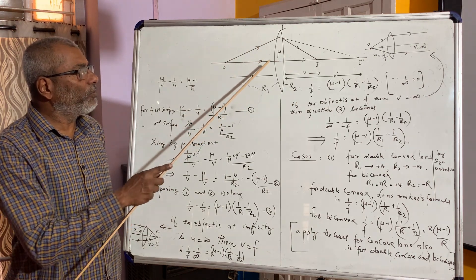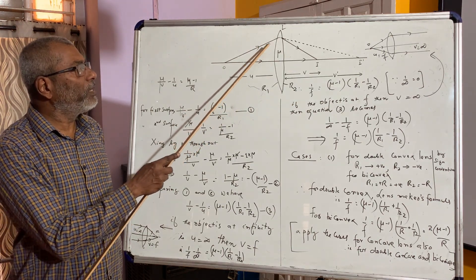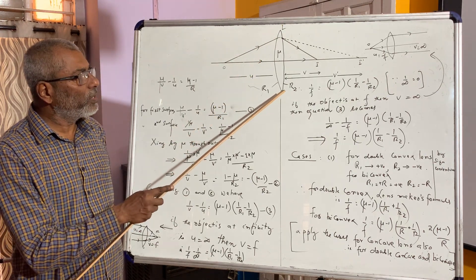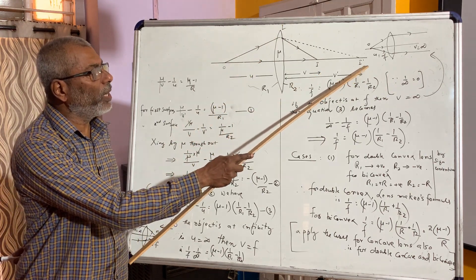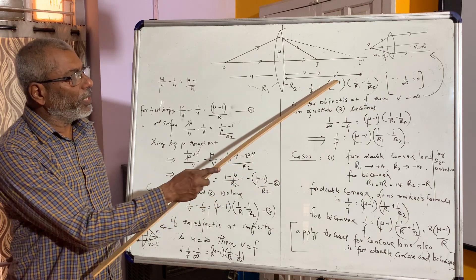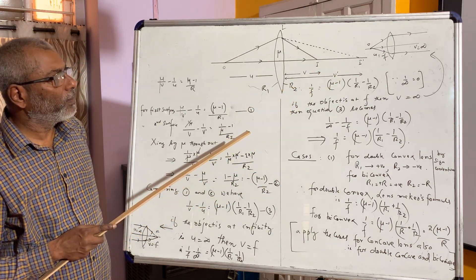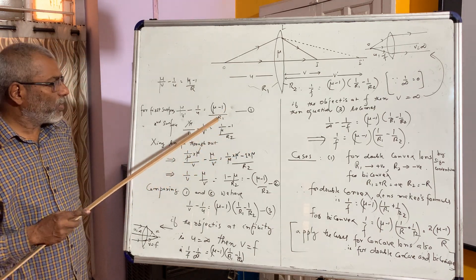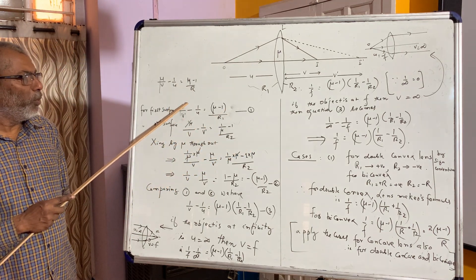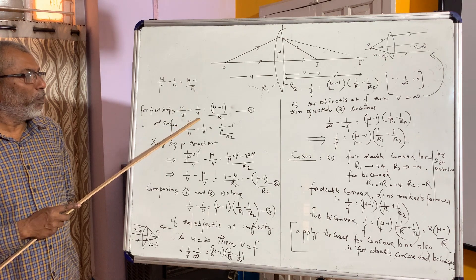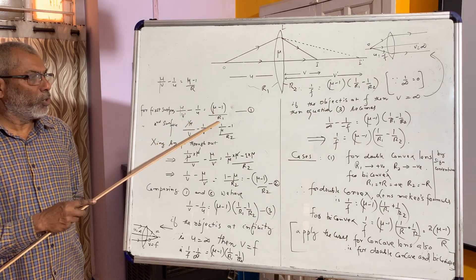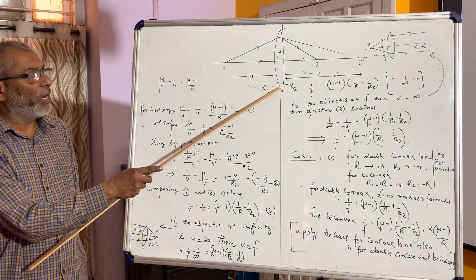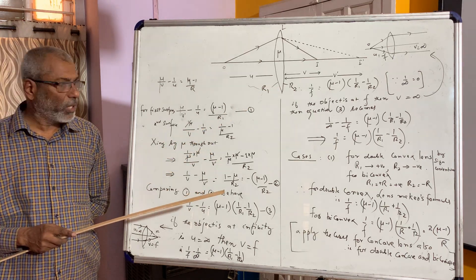When incident light falls on the first curved surface, it forms the image at I', at a distance V', as shown in the figure. For the first curved surface we can write: μ/V' minus 1/U is equal to (μ minus 1)/R1, where R1 is the radius of curvature of the first curved surface.